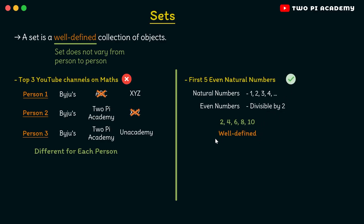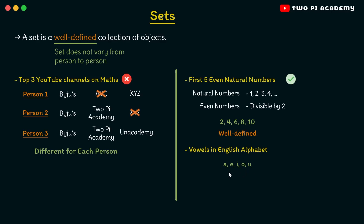Another example of a set can be vowels in the English alphabet. Every person knows that the English alphabet has 5 vowels: A, E, I, O and U. This does not change from person to person — every person will name the same 5 letters. Therefore, it is also well-defined and hence a set.